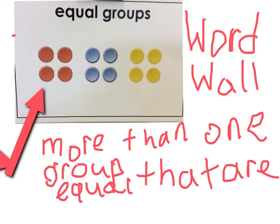That's what it is. An equal group is more than one group that is equal. So let's just get that out of the way for a second.